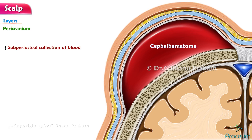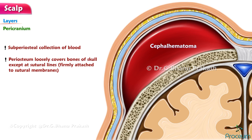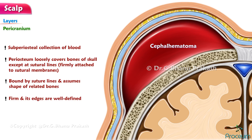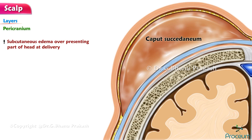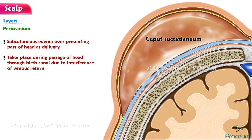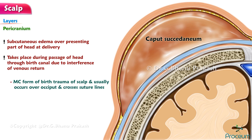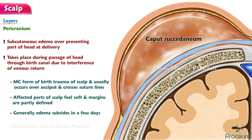Cephalhematoma is a subperiosteal collection of blood. Since the periosteum of the skull loosely covers the bones except at the sutural lines where it is firmly attached to the sutural membranes, the hematoma is bound by suture lines and assumes the shape of the related bones. It is firm and its edges are well defined. A cephalhematoma is commonly found in the parietal region. Caput succidaneum is a subcutaneous edema over the presenting part of the head at delivery. It occurs during passage of the head through the birth canal due to interference with venous return, and is the most common form of birth trauma of the scalp, usually occurring over the occiput and crossing the suture lines. The affected parts feel soft and margins are partly defined. Generally, the edema subsides in a few days.